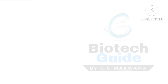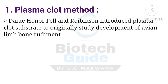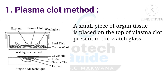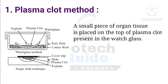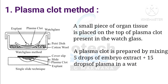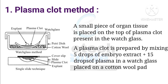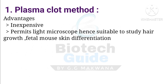For the plasma clot method, Dame Honor Fell and Robinson introduced the plasma clot substrate originally to study the development of the avian limb bone rudiment — that is, the bird leg skeletal part. In this method, a small piece of organ or tissue is placed on top of a plasma clot present within a watch glass. In the assembly, a petri dish contains cotton wool, on top of which a watch glass is placed. Inside the watch glass, a medium mixture of five drops of embryo extract and fifteen drops of plasma is placed, and above this mixture the explant is placed, then the whole assembly is covered with a lid.